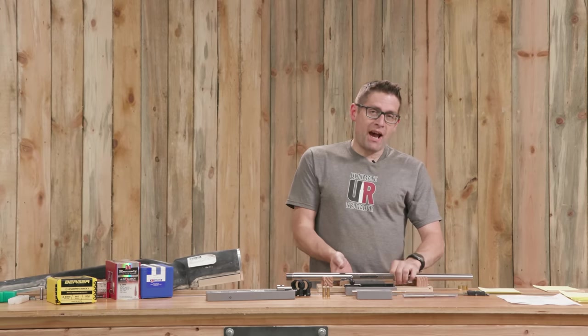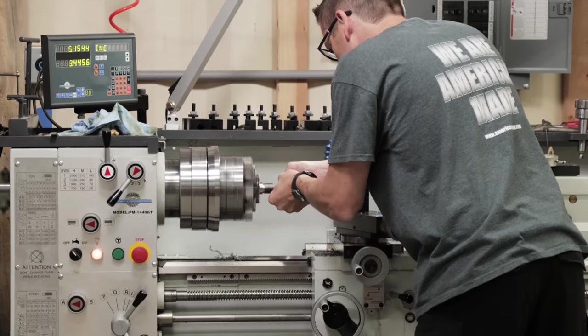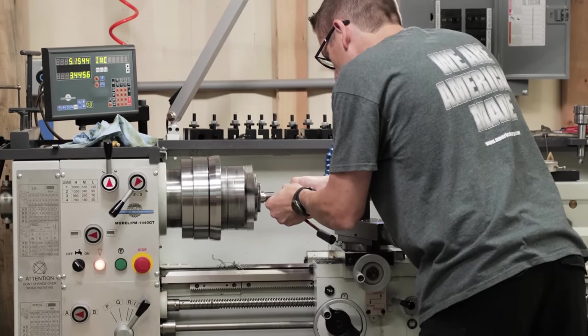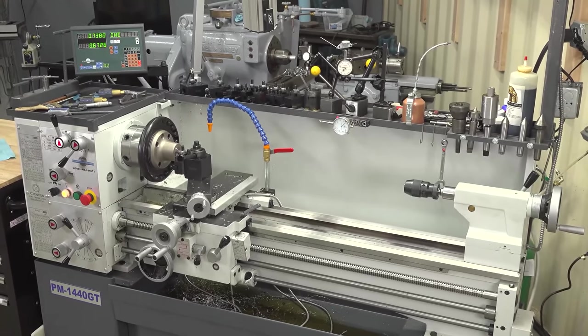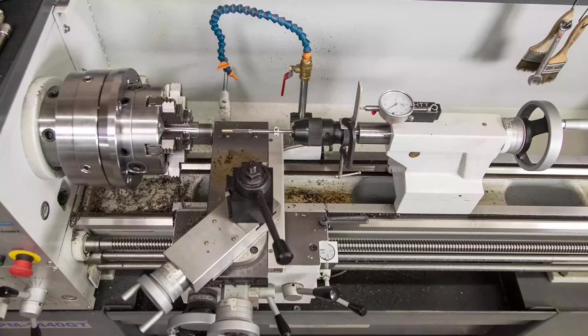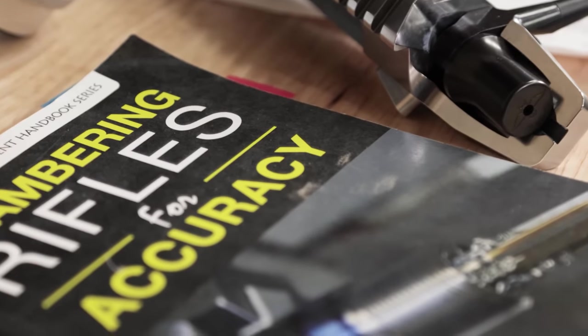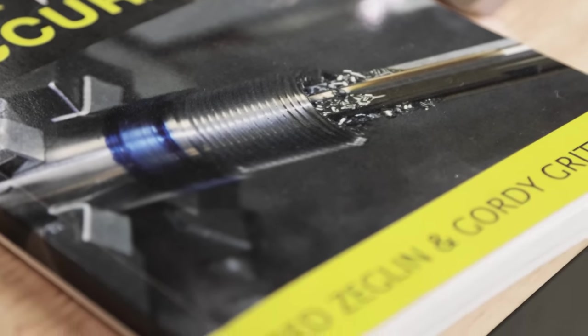So fast forward to now and we've got the barrel work complete. Like the other recent builds that you've seen here on the channel, I'm using the Precision Matthews PM 1440 GT All Taiwanese Precision Lathe. This is a great piece of equipment for these kinds of precision builds. I'm using Chambering Rifles for Accuracy. This was a collaboration between Gordy Gritters and Fred Zaglin.